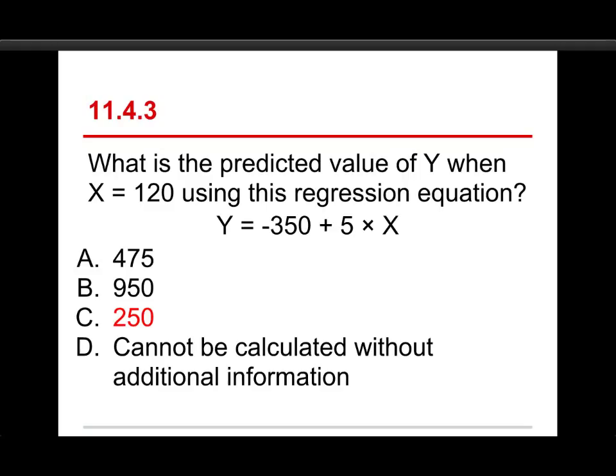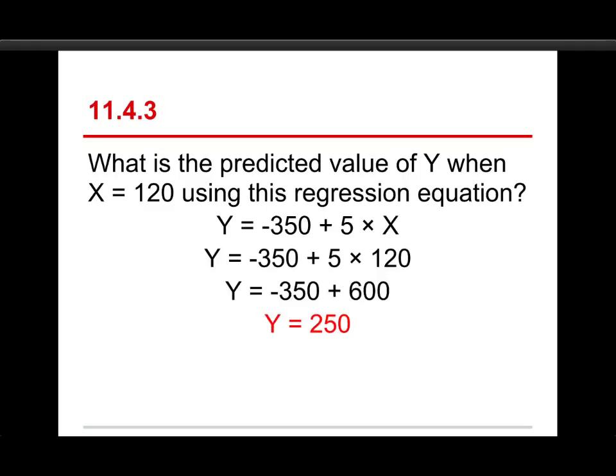You just plug the 120 into the X and remember because of order of operations you want to do the multiplication first. So 5 times 120 is 600 and then you're going to combine that with minus 350 and that gives you a total of 250 and that's the answer.